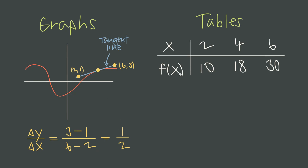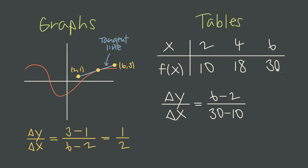We can do the same thing from a table of values. If we want to estimate the derivative at x = 4, the function value of 18 tells us the curve passes through (4, 18), but that doesn't tell us anything about slope. We take the change in y over the change in x using points on either side: the difference in x values is 6 minus 2, and the change in y values is 30 minus 10. That gives us 20 over 4, or 1/5. So while the graph passes through (4, 18), the slope or derivative at x = 4 is approximately 1/5.